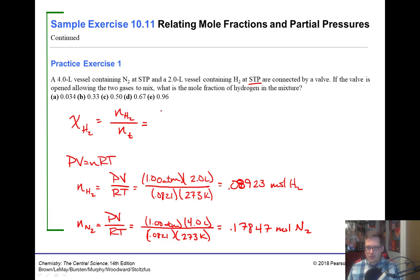So the mole fraction here. So we have the moles of hydrogen. So that'd be the 0.08923 divided by the total moles. So that would be the 0.08923 plus the 0.17847. So I got 0.3333. Really what we'd want is two sig figs for our answer. So the answer would be B.